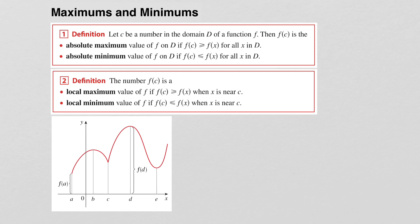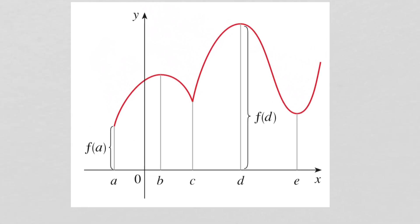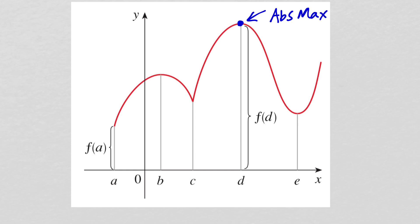The graph here will provide some context. In terms of absolute maximums and minimums, we have an absolute maximum at this point because this is the highest point on the entire function. And we have an absolute minimum at this point because this is the lowest point on the entire function.